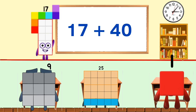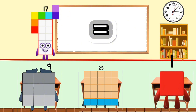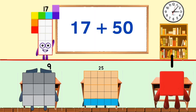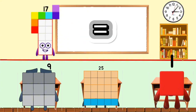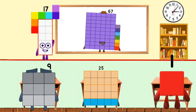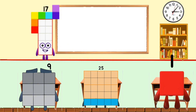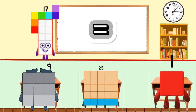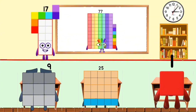17 plus 40 equals 57. 17 plus 50 equals 67. 17 plus 60 equals 77.